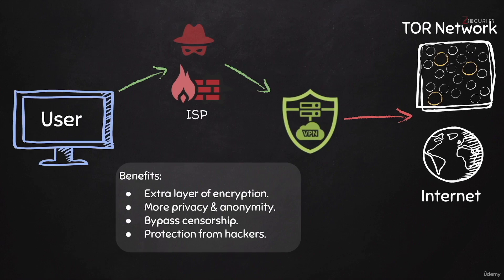In the previous section, we learned what a VPN is, its benefits, and how to connect to it before connecting to the Tor network. This was very easy, as all we had to do is download the client compatible with our operating system. Most VPN providers offer a Linux client, and Tails is a Linux distro.